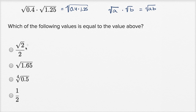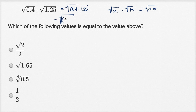What is that going to be? 4 times 1.25 would be 5, but this is 0.4 times 1.25, so this is going to be 0.5. So this is going to be the square root of 0.5.